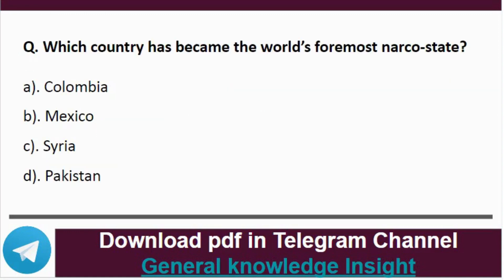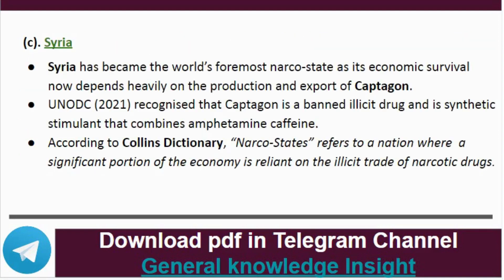Question 12: Which country has become the world's foremost narco state? The correct answer is option C, that is Syria. Syria has emerged as the world's foremost narco state as its economic survival now depends heavily on the production and export of Captagon. UNODC in 2021 recognized that Captagon is a banned illicit drug and is a synthetic stimulant that combines amphetamine and caffeine. According to the Collins Dictionary, a narco state refers to a nation where a significant portion of the economy relies on the illicit trade of narcotic drugs.